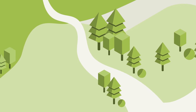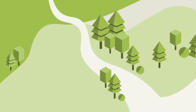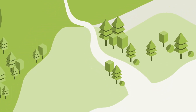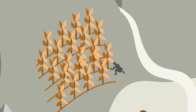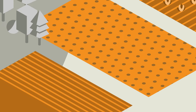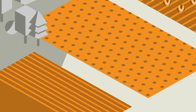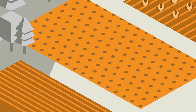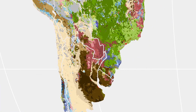Each food scape class includes biophysical information — the geology, ecology, and climate of a place — and also the farming practices used there, like irrigation, tillage, and nutrient inputs. You can see how different food scape classes interact to form a mosaic within a political boundary, or within a geography or biome.